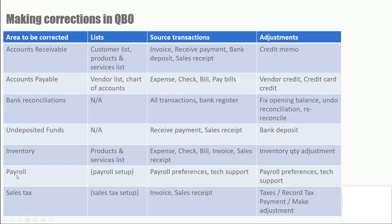For payroll, it's really governed by the payroll setup as well as payroll preferences. When you have payroll problems and you're using QuickBooks Online Payroll, you may need to make corrections using payroll preferences, or you need to contact tax support. For sales tax, it's also governed from the sales tax setup. Source transactions include invoices and sales receipts. To make adjustments, you need to go to Taxes, Record Tax Payment, and Make Adjustment.